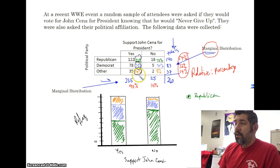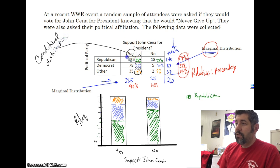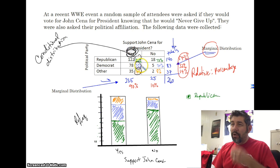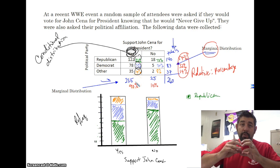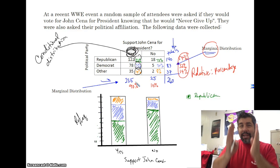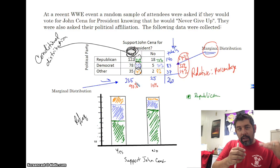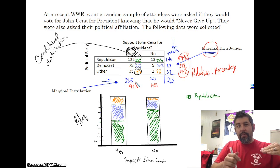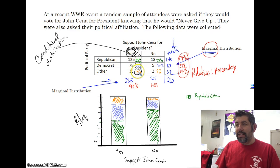These values are called conditional distributions. A conditional distribution is not marginal — marginal has to do with totals. Conditional has to do with one of the categories within a variable: you're taking the percentage of each category in one variable and seeing how those relate to one category in the other variable.